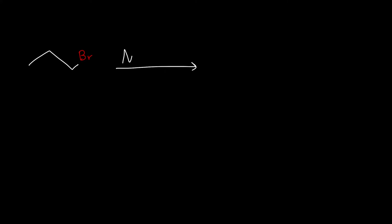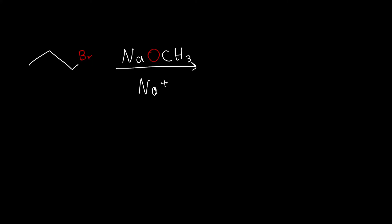Let's go over another example. In this case, the sodium is just going to be a spectator — it's not going to do anything in this reaction. The nucleophile, or what's going to replace this bromine, is going to be the OCH3. This negatively charged particle's electrons are going to approach this carbon atom, and then the bromine is going to take the electrons in the bond with the carbon with it.